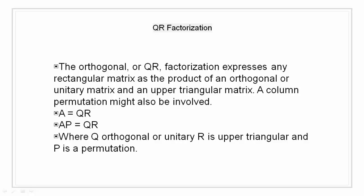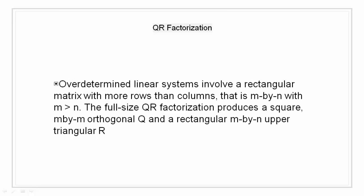The orthogonal or QR factorization expresses any rectangular matrix as a product of an orthogonal or unitary matrix and an upper triangular matrix. A column permutation might also be involved. So the QR factorization says that A is equal to QR or AP is equal to QR where Q is orthogonal matrix, R is an upper triangular matrix, and P is a permutation. There are four variants of QR factorization: full or economy size and with or without column permutation. As an example I am going to consider full size QR factorization for an over determined system of linear equations. The over determined system of linear equations involves a rectangular matrix with more rows than columns. That is for a matrix m by n, m is greater than n. The full size QR factorization produces a square m by m orthogonal Q and a rectangular m by n upper triangular R.